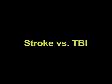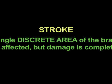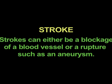Many people often confuse a stroke with a traumatic brain injury. In a stroke, there is a single discrete area of the brain that is affected, and the damage to that area is complete. Strokes can be caused by either a blockage of a blood vessel — which is the most common type — or a rupture of a blood vessel, such as an aneurysm, where blood is released into the brain.